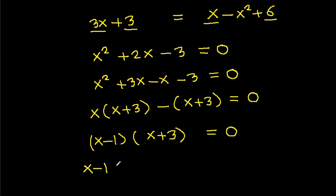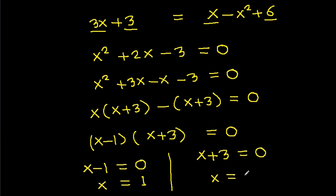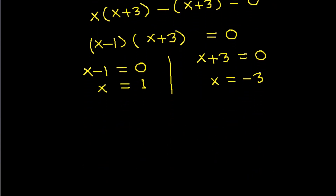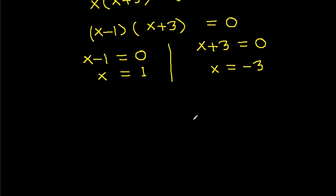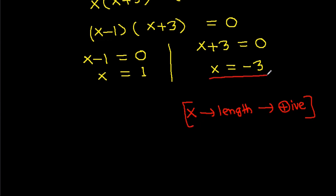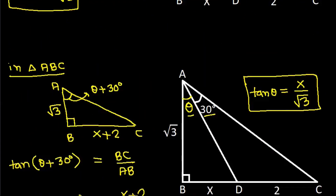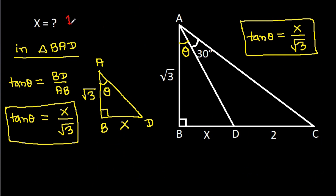So either X minus 1 equals 0, giving X equals 1, or X plus 3 equals 0, giving X equals minus 3. Since X is a length, it must be positive, so X cannot be negative. Therefore X equals 1.